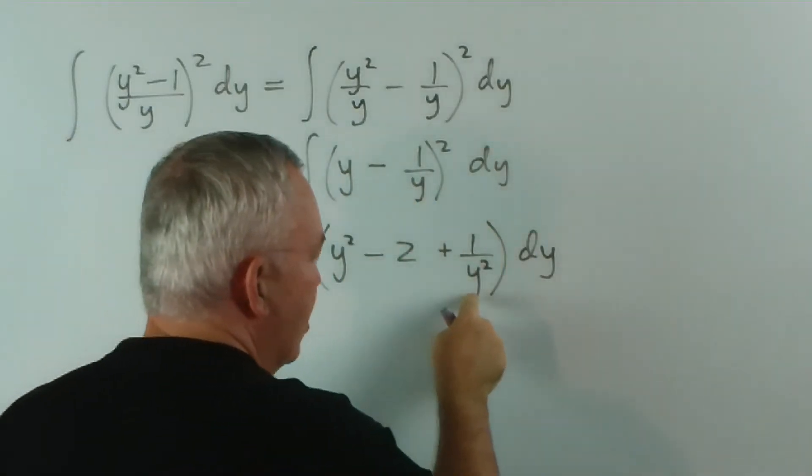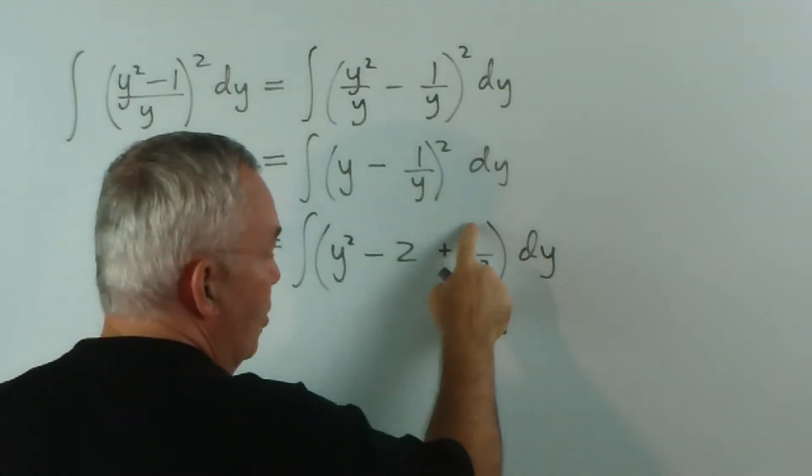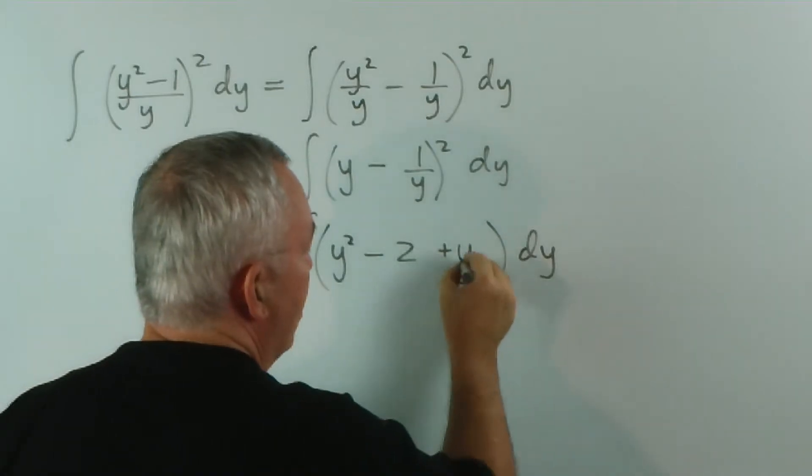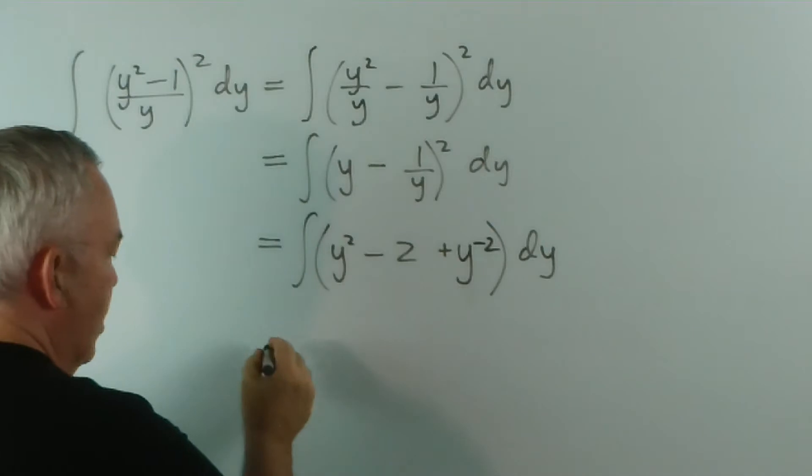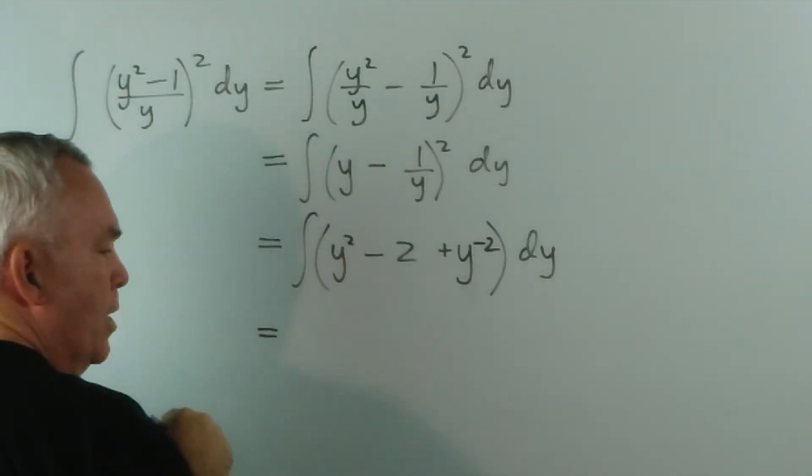Now, the reason I hesitated is it's often good to write that as y to the minus 2. In fact, I'll do that right away because it makes our integration that much easier.